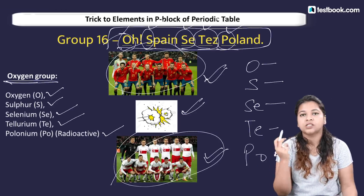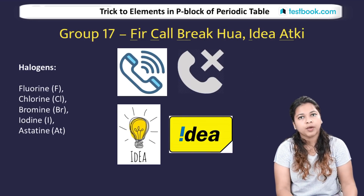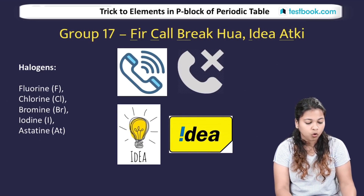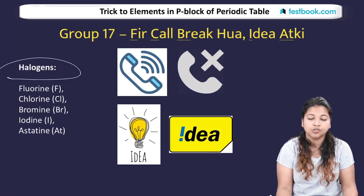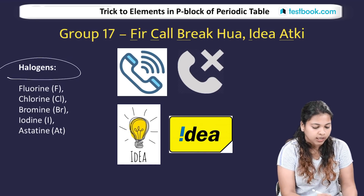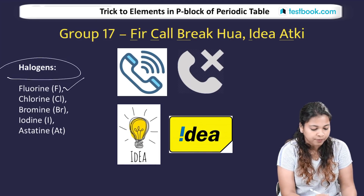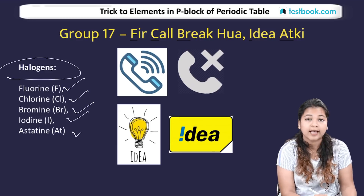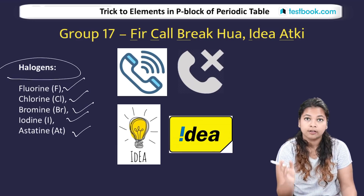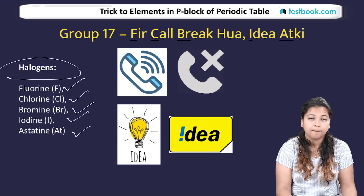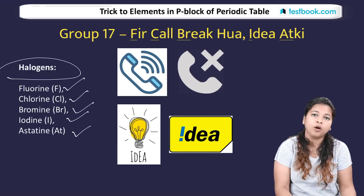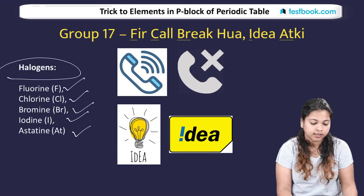Now let's go to group 17. In group 17, the elements are halogens. What are halogens? The elements of halogens in group 17 are fluorine, chlorine, bromine, iodine and astatine.